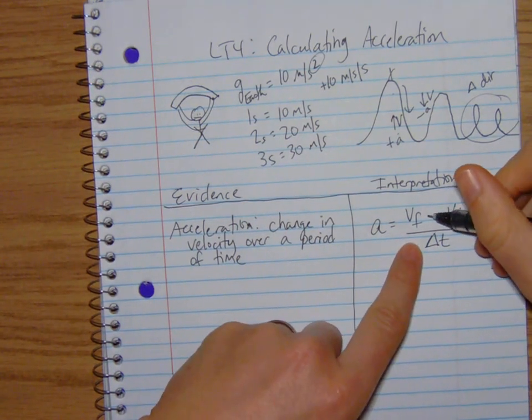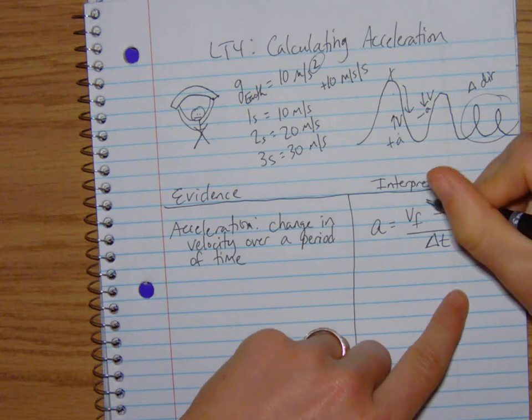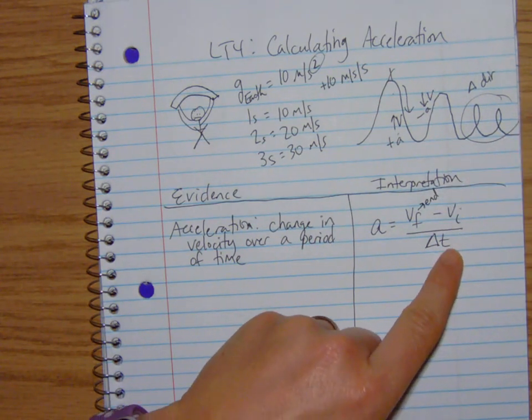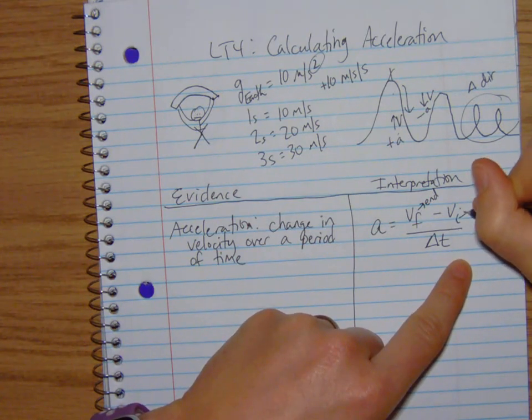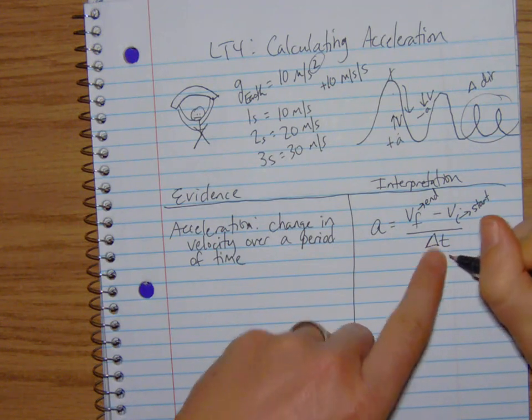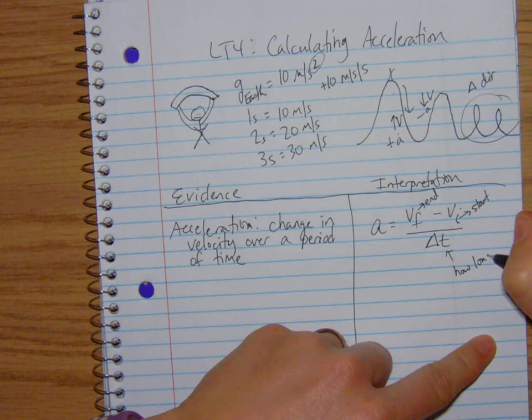So the formula we're going to use is final velocity minus the initial velocity and we divide that by the change in time. What I mean by final velocity is you'll see story problems where you're looking at a snapshot of a situation. The final velocity would be the end speed that they're going. The initial would be at the beginning of the story problem. How fast are they going? And then the time component is how long did that take?